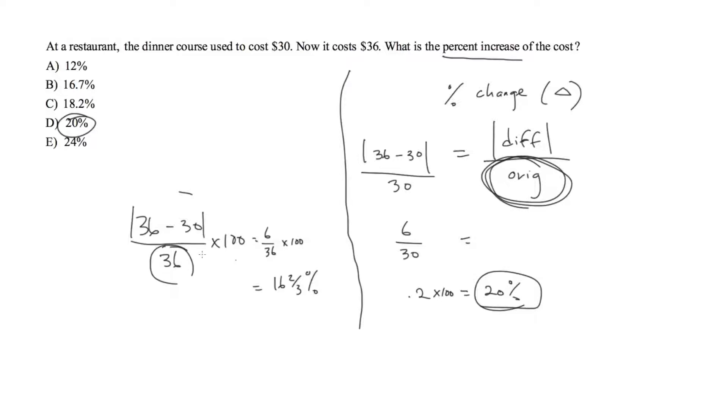So just be careful which number you use as the original. But the cool thing is you only need to know one equation for the percent change. That's the absolute value with the positive difference divided by the original number, and to make it a percent you multiply times 100.